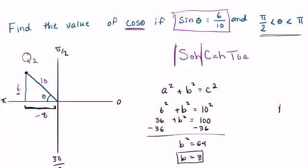And that follows that whole mnemonic device of all students take calculus. We know that in quadrant 2, only sine and cosecant are going to be positive. Tangent, cosine, secant, and cotangent will all be negative.